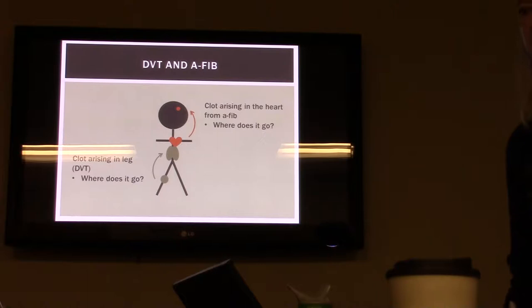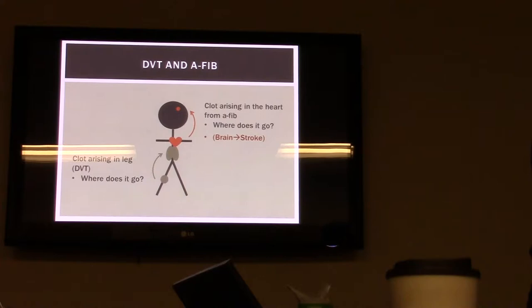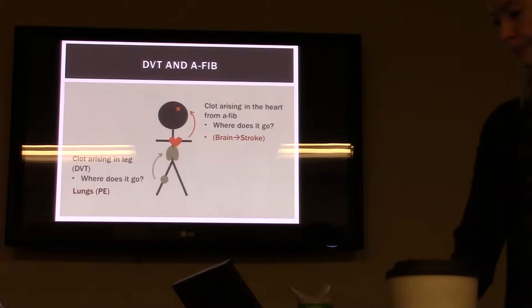For DVTs and AFib, if you have a clot arising from the heart in AFib, where are we worried about it going? It's going to go to your brain, or possibly to your heart — it can cause an MI or a stroke. For a clot arising in your leg or a DVT, that's going to go to the lungs. That's when we're worried about preventing a pulmonary embolism.